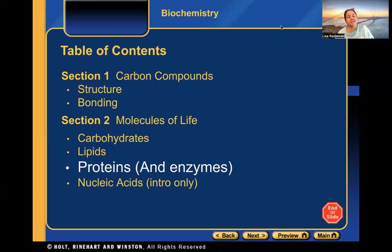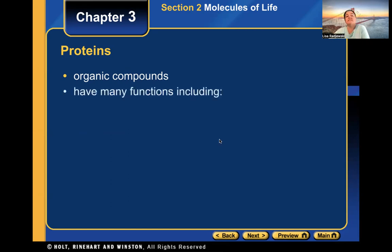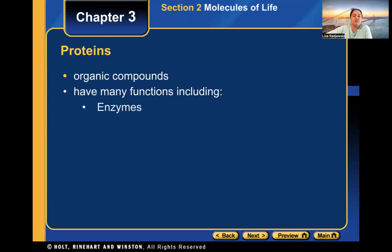This podcast continues section two of our macromolecules unit, covering proteins and enzymes. This is our third macromolecule. Just like carbohydrates and lipids, proteins are organic compounds, meaning they contain carbon and hydrogen. Proteins, however, have many more functions compared to carbohydrates and lipids.